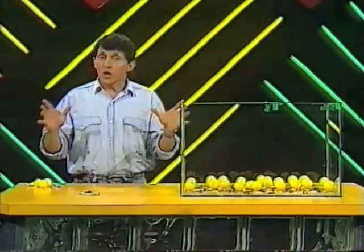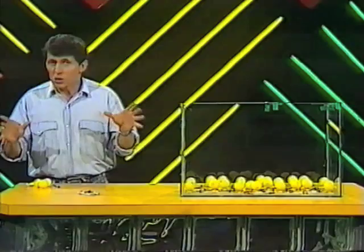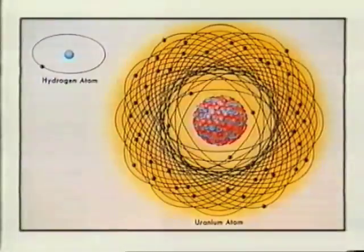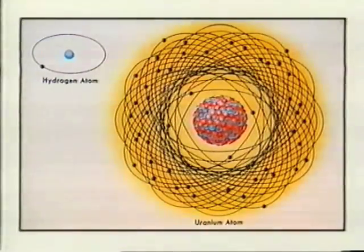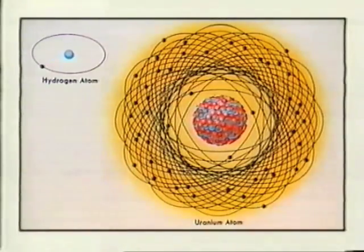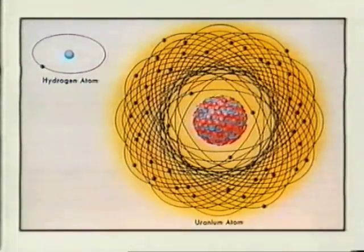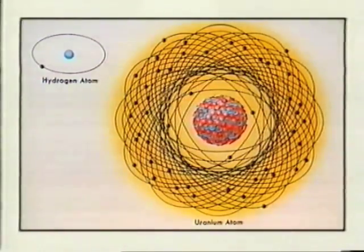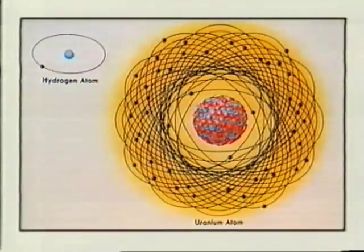Atoms vary enormously in size, from the tiniest ones called hydrogen atoms — one proton in the middle, one electron around the outside — through to things like uranium, which have dozens of protons and neutrons in the middle, and dozens of electrons around the outside.